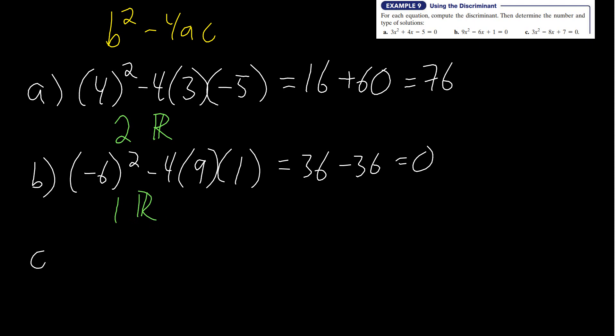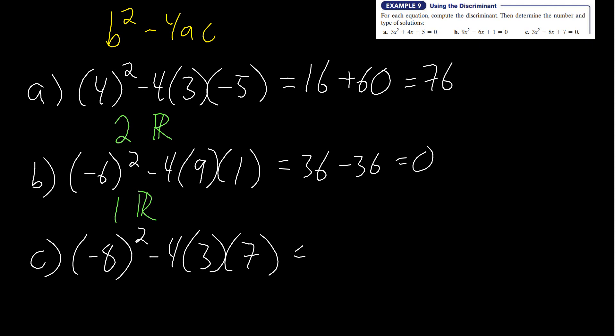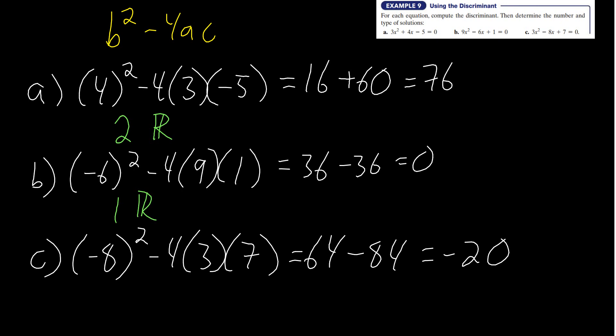Example 7c: (negative 8) squared minus 4 times 3 times 7. Negative 8 squared is 64. Negative 4 times 3 is negative 12, and 12 times 7 is 84 — so negative 84. Then 64 minus 84 equals negative 20. Since we have a negative discriminant, we know we're going to have two imaginary numbers — or two complex solutions.